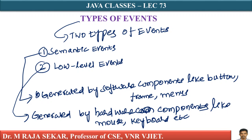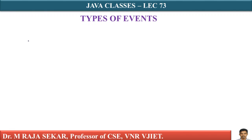Java's event handling mechanism supports low-level events. For this purpose, three listeners are often used. What are those three listeners? For the low level events generated by hardware components like mouse, keyboard, etc., Java's event handling mechanism supports low-level events, and for this purpose three listeners are very often used.